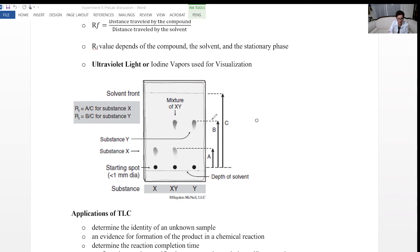Then you find that ratio. So when you find that ratio, like A divided by C, it would be a number between 0 and 1. And that is known as the RF value.